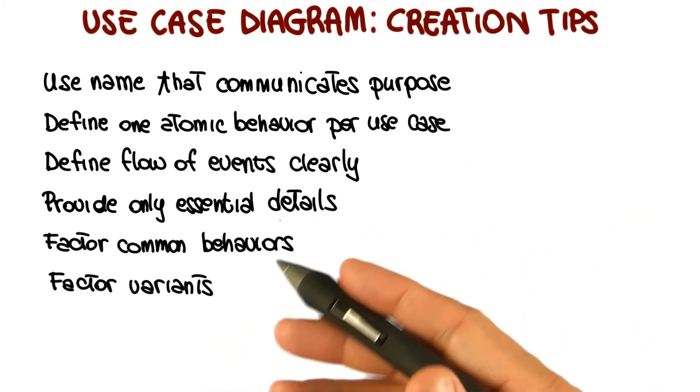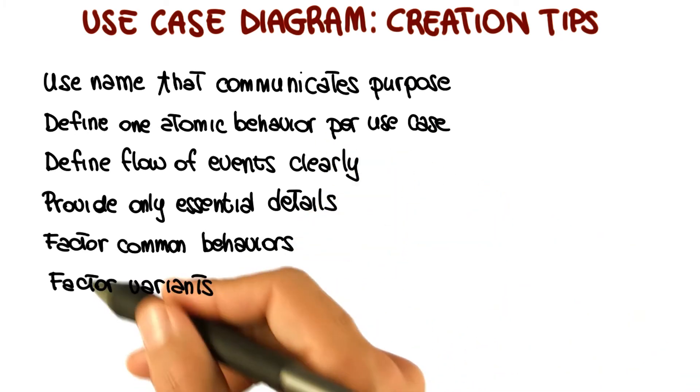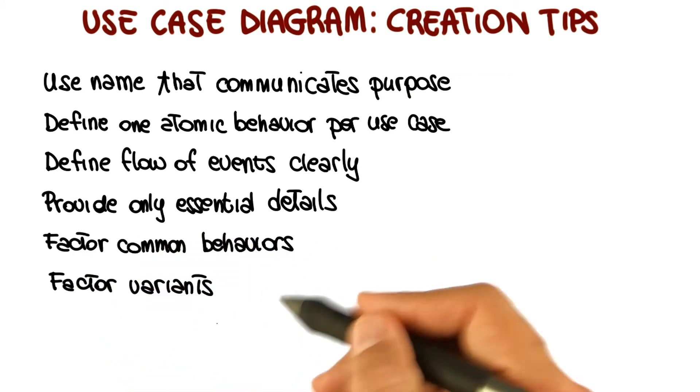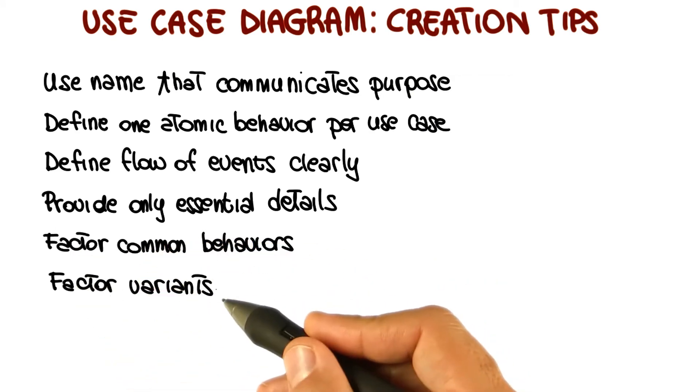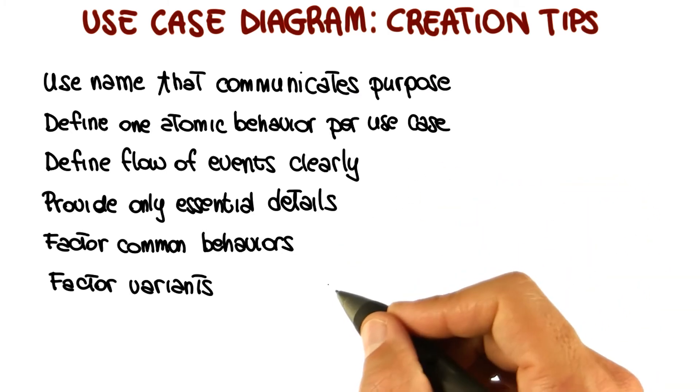Finally, even though we didn't cover that, there is a way to factor common behaviors and factor variants when defining use cases. I would encourage you to look at how to do that, for example by looking at additional UML documentation and to try to factor out these common behaviors and variants.